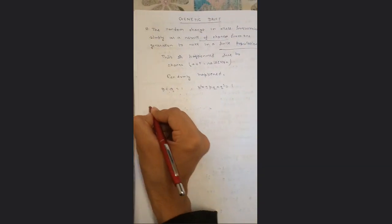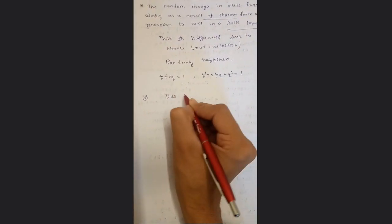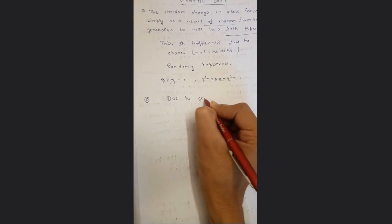For Hardy-Weinberg equilibrium to hold, the population must be very large, because for a large population, a slight change in allelic frequency is very difficult. We will see this in more detail later. First we need to know that due to genetic drift, an allele in a population can be fixed, can be lost, or remain somewhere in the middle.